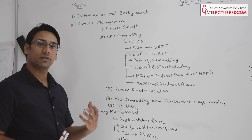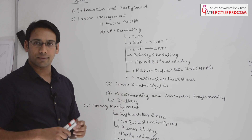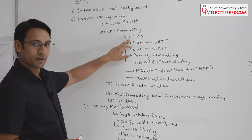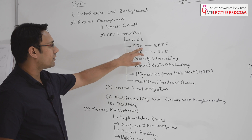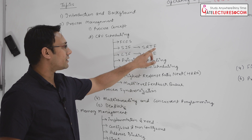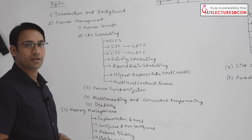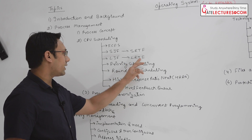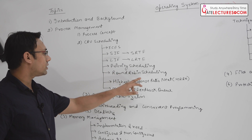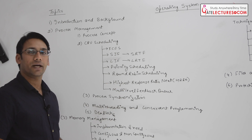Then we are going to discuss about the different state diagrams of a process — that means what are the states at which a process can be. Then we are going to discuss about CPU scheduling, where we have: first come first served scheduling, shortest job first scheduling, shortest remaining time first scheduling, longest job first scheduling, longest remaining time first scheduling, priority scheduling, round robin scheduling, highest response ratio next scheduling, and multi-level feedback queue scheduling.